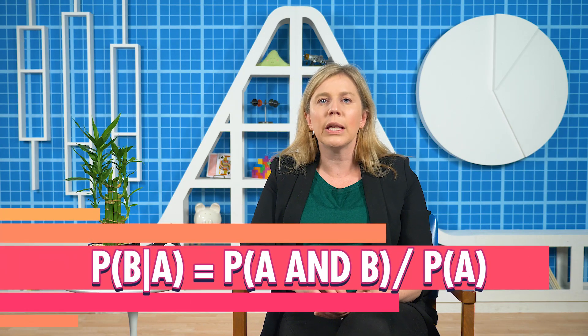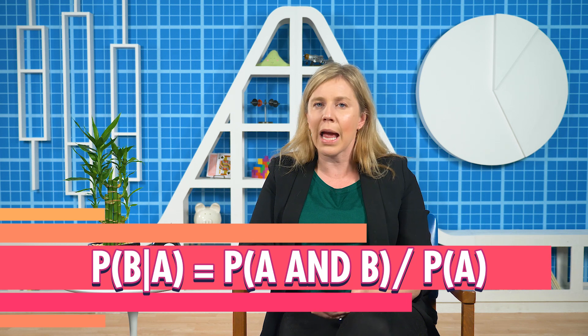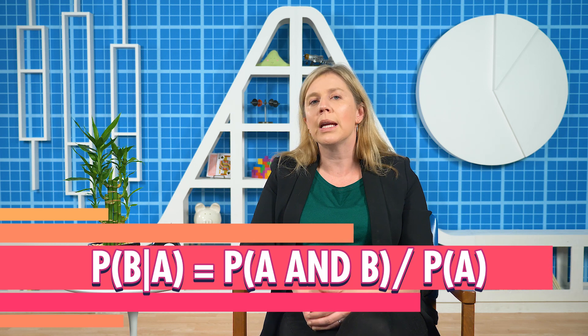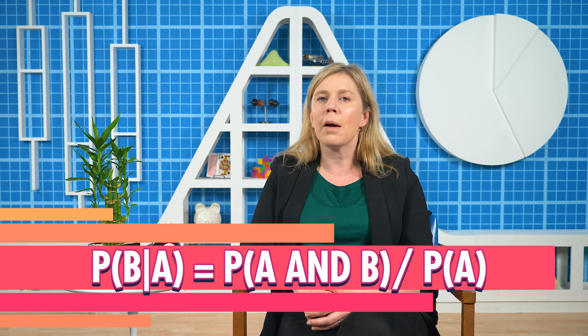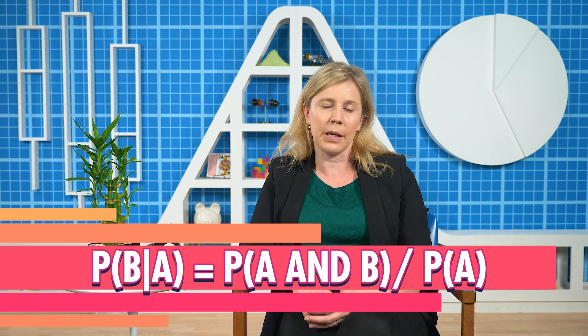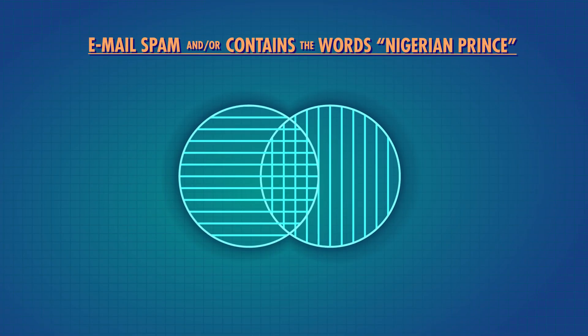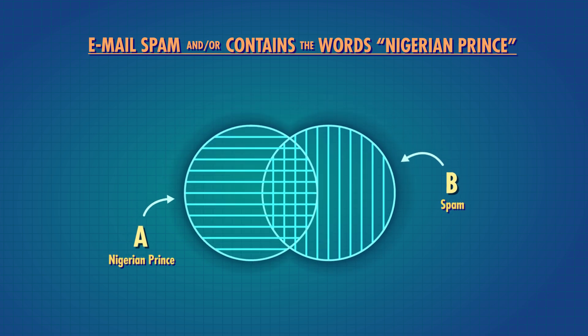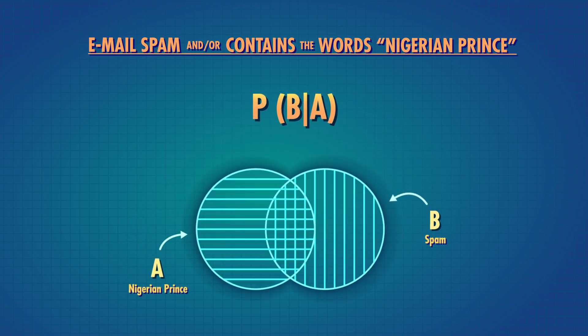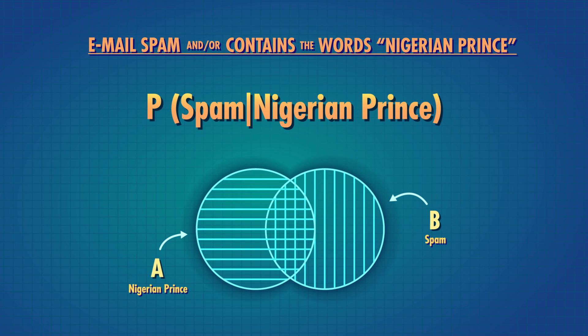In general terms, conditional probability says that the probability of an event B, given that event A has already happened, is the probability of A and B happening together, divided by the probability of A happening. Let's look at a concrete example so we can visualize it. Here's a Venn diagram of two events: an email containing the words 'Nigerian Prince', and an email being Spam. So I get an email that has the words 'Nigerian Prince' in it, and I want to know what the probability is that this email is Spam, given that I already know the email contains the words 'Nigerian Prince'.